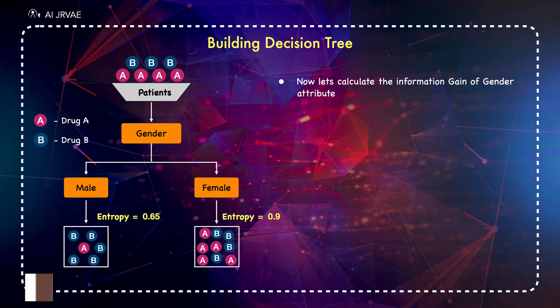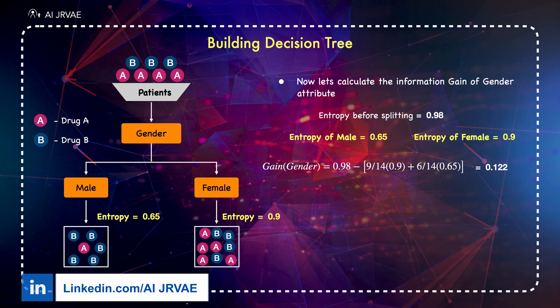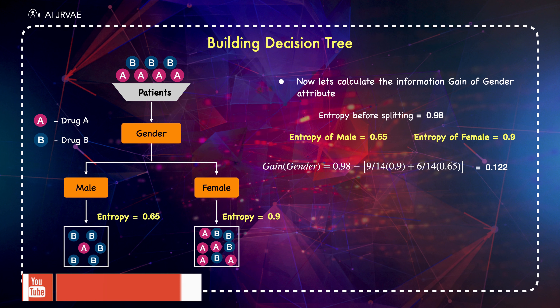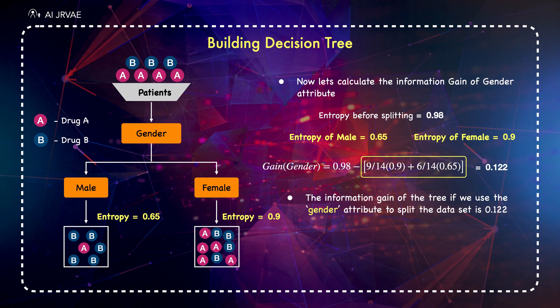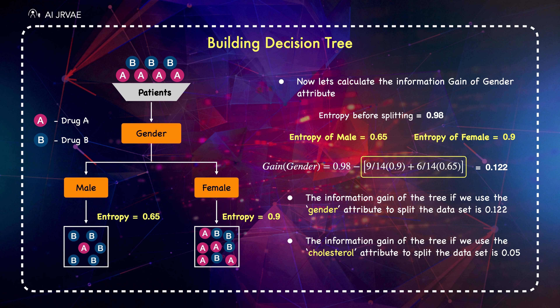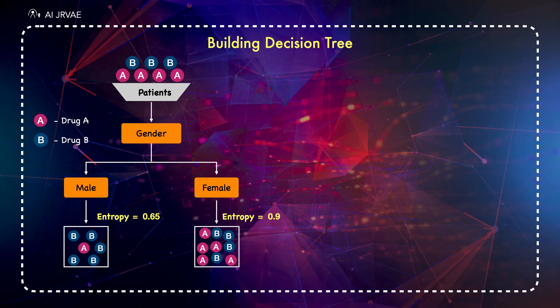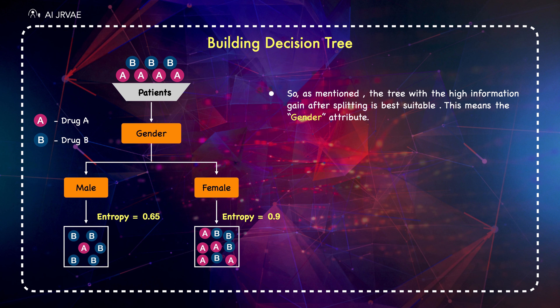Now let's calculate the information gain of the gender attribute. The entropy of the tree before the split is 0.98. The portion of female patients is 9 out of 14 and its entropy is 0.90. The portion of males is 6 out of 14 and the entropy of the male node is 0.65. The result of the square bracket here is the weighted entropy after the split. So the information gain of the tree using the gender attribute to split the dataset is 0.122. We can also calculate the information gain using cholesterol, which is 0.05. The tree with the higher information gain after splitting is best — this means the gender attribute wins.